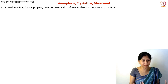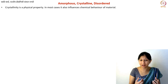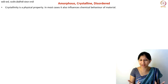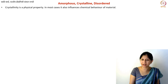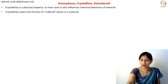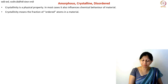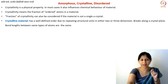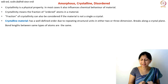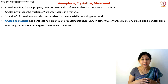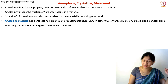Is crystallinity a physical property? Yes and no — it determines a lot of physical and chemical properties of the material, but it is essentially an arrangement. That physical arrangement is defined by the chemical properties, attractive forces between atoms, and the nature of bonding. It influences electrical, thermal, and all sorts of behavior of the material. Crystallinity means you have a certain order in the material.